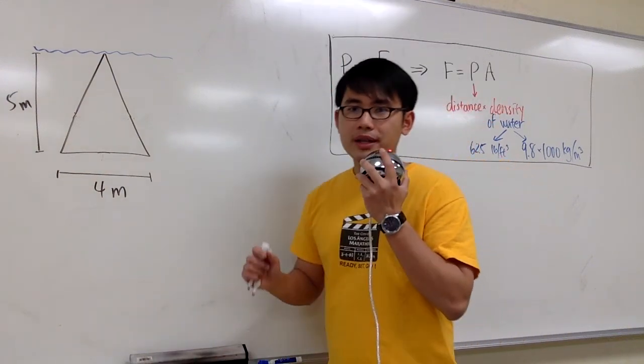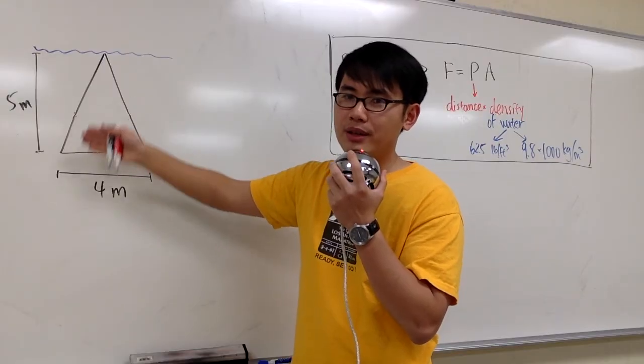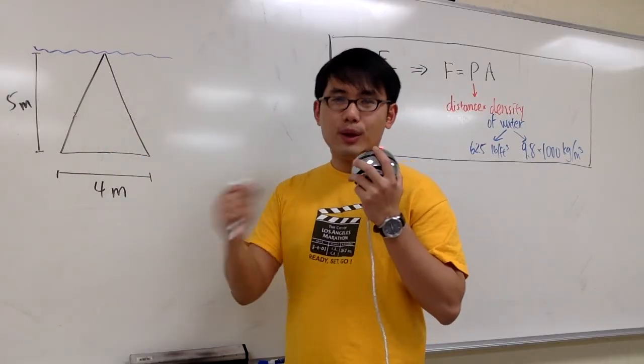In this equation, we will calculate the hydrostatic force that's acting on this triangular plate when this is put down into the water vertically. How can we do it?